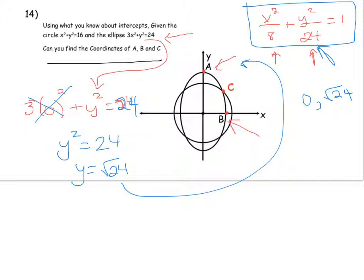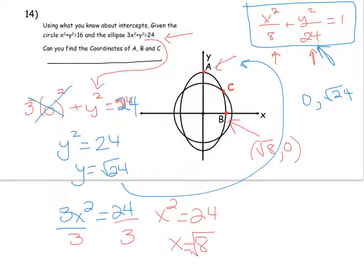All right. And then B is the same thing. But in this case, y is equal to 0. So you set y equal to 0, and that's going to go away. And you get 3x squared equals 24. You divide both sides by 3. You get x squared equals 8. So x equals root 8. The coordinate of B would then be root 8 comma 0.